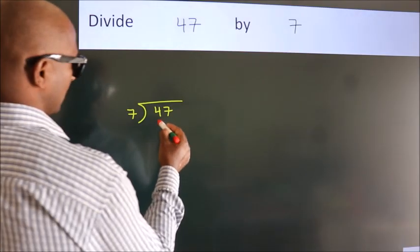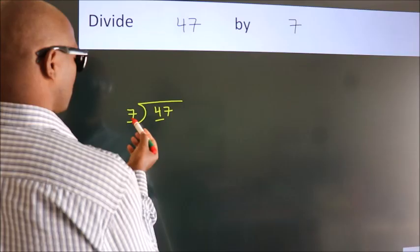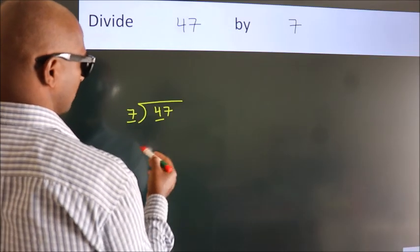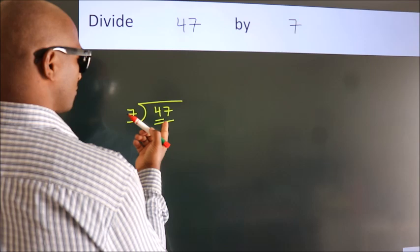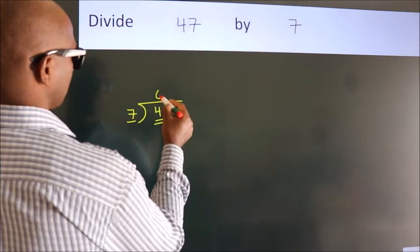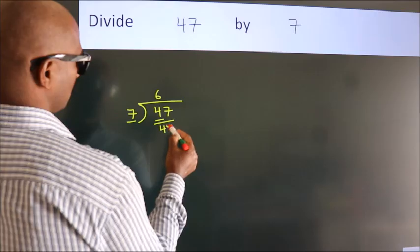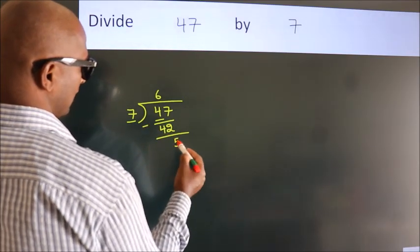Next, here we have 4. Here 7. 4 is smaller than 7, so we should take two numbers: 47. A number close to 47 in the 7 table is 7 times 6, which is 42. Now we should subtract. We get 5.